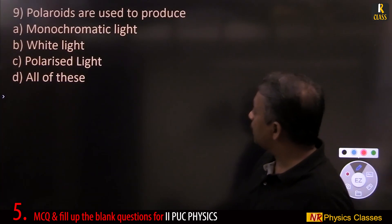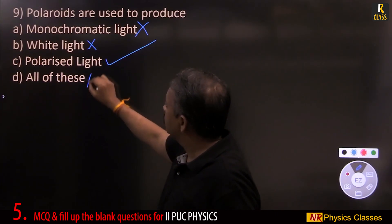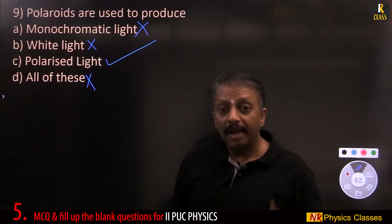Polaroids are used to produce polarized light, plane polarized light.